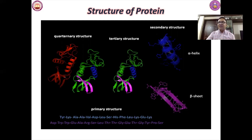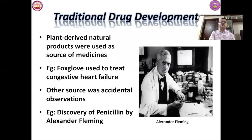Proteins also act as messengers — some types of hormones transmit signals to coordinate biological processes between different cells, tissues, and organs. Structurally, proteins provide structure and support for cells and allow the body to move. Additionally, proteins play an important role in transport and storage, binding and carrying atoms and small molecules within cells and throughout the body.